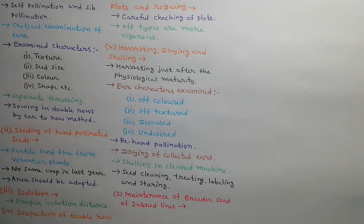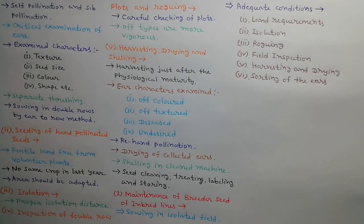Second is maintenance of breeder seed in inbred lines. Seeds must be grown in isolated fields. Following conditions must be adequate: land requirements, isolation, rogging, field inspection, harvesting and drying and sorting of the ears.